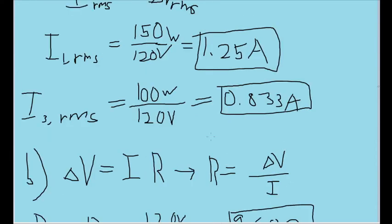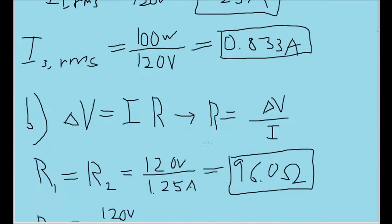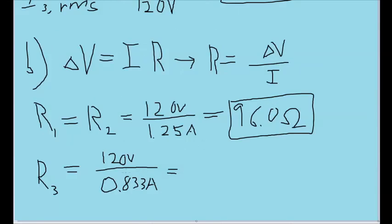For lamp 3, we found a current of 0.833 amps instead. So we'll use that value in place of 1.25, and then we'll find a resistance of 144 ohms.